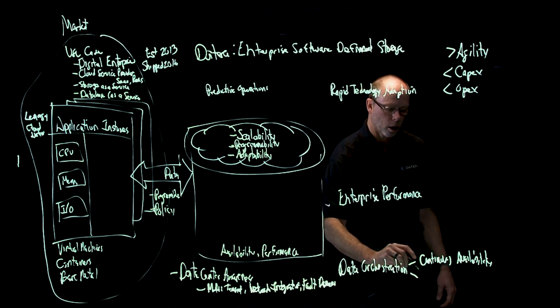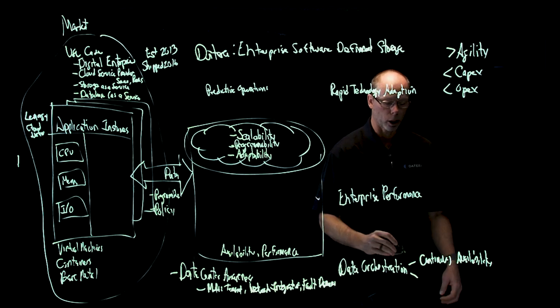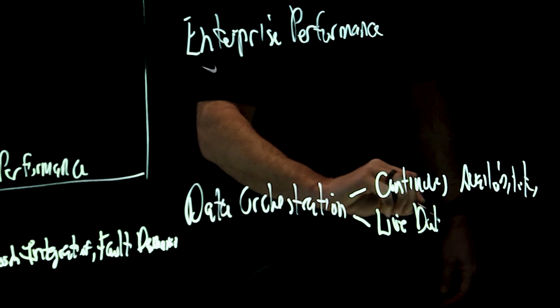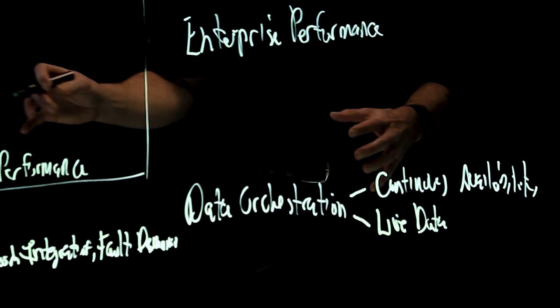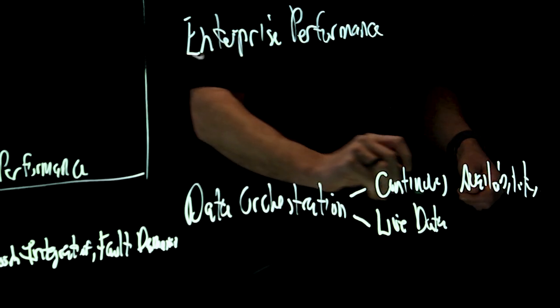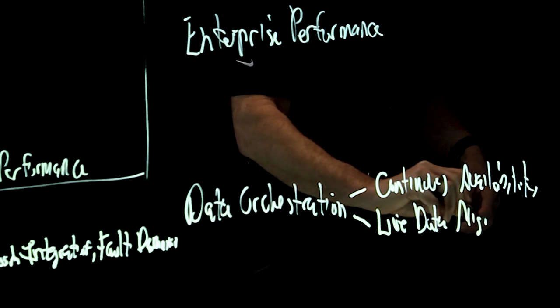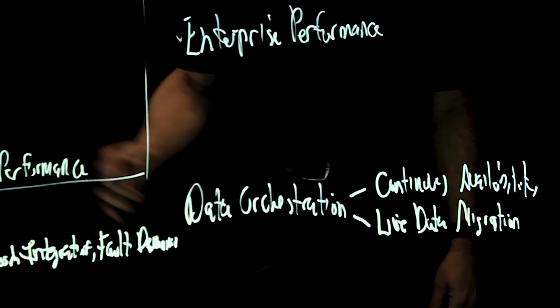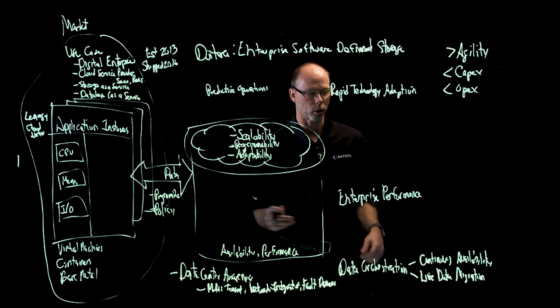And the next part of our key intellectual property is live data migration. In these systems, policies change, other business attributes change. Things change all the time, and we must be able to migrate data within the system non-disruptively while meeting the service level objectives specified in the policy.